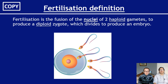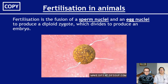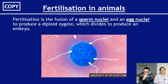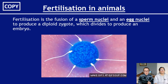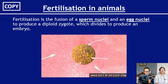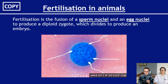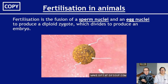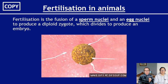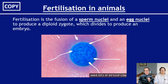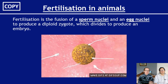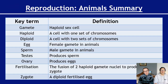For animals specifically, put that definition into context: fertilization is the fusion of a sperm nucleus and an egg nucleus to produce a diploid zygote, which divides to produce an embryo. Make a specific flashcard for this — just like the exact words for osmosis or diffusion, you must have those exact words memorized.